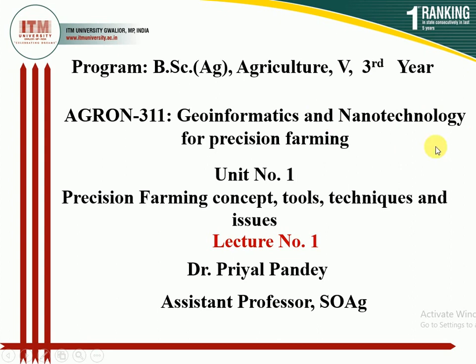The second one is Nanotechnology. In Nanotechnology, we basically understand nano-dimensional objects, or objects having a dimension of 10 to the power minus 9 meters, which will be useful for improving the efficiency of technology used in precision farming. The implementation of nanotechnology in precision farming is in the form of small sensors, monitoring devices, or nano delivery systems, which are used as slow release carriers or delivery systems for fertilizer, pesticide, or any other agrochemicals.